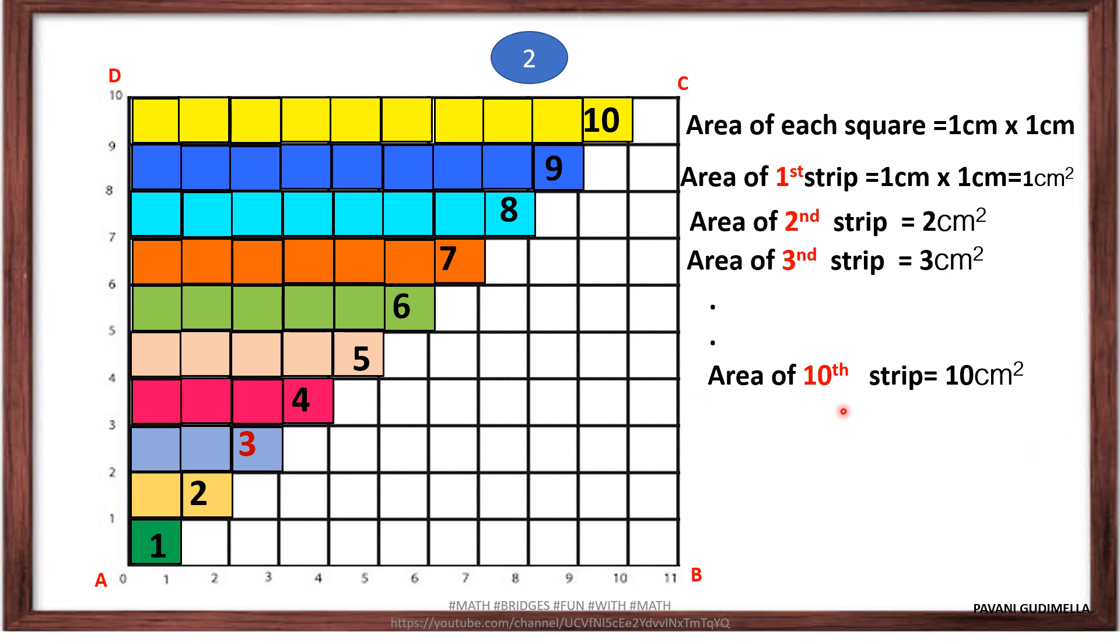So similarly, if we consider the tenth strip, the area will be 10 centimeter square. So what is the area of only this colored strip? We have to add the area of all these strips. That means area of first strip plus second strip plus third strip plus up to tenth strip. So when we add all these things, we will be getting it to be as 55 centimeters square.